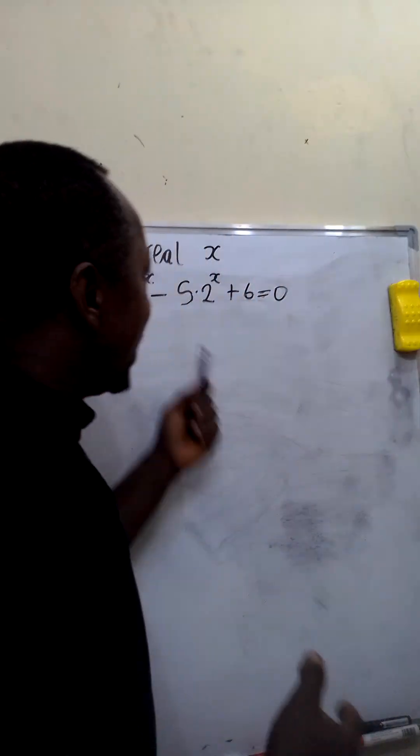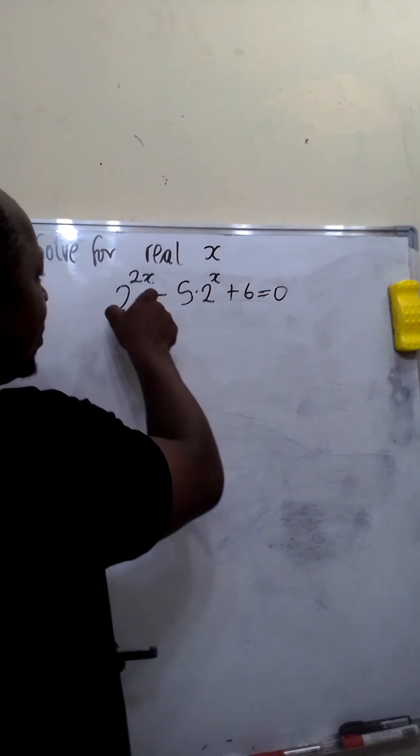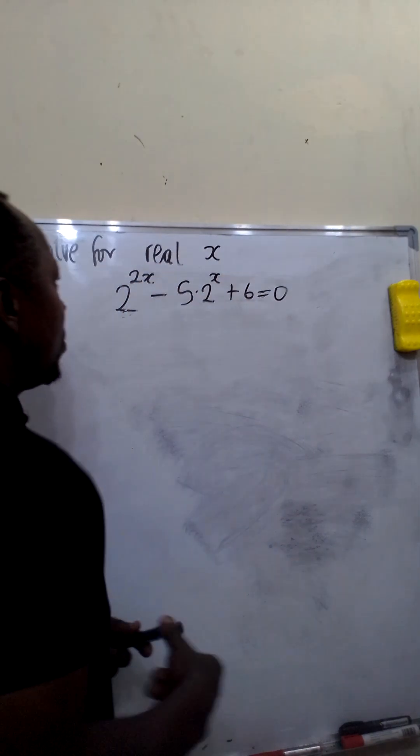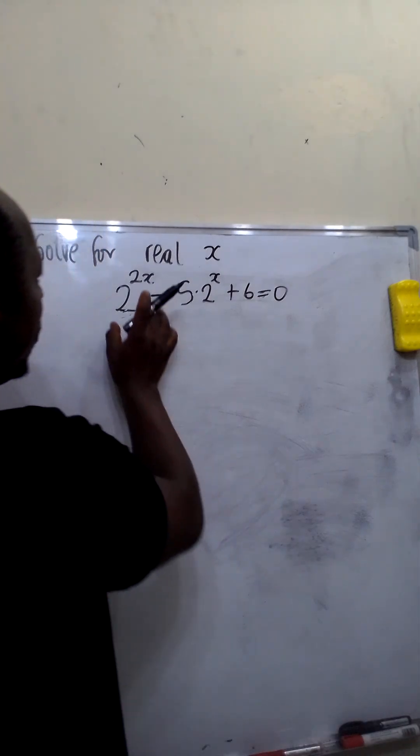So let's find the value of x in this equation. We are given 2 raised to the power 2x minus 5 times 2 raised to the power x plus 6 equal to 0. From our law of indices,